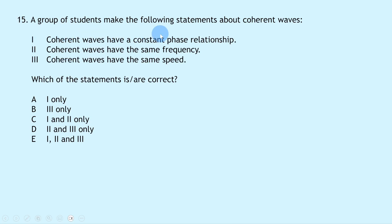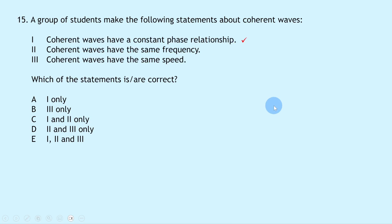Question 15 presents three statements about coherent waves. Statement 1 — coherent waves have a constant phase relationship. Statement 2 — coherent waves have the same frequency. Statement 3 — coherent waves have the same speed. All three are true; coherent waves have the same speed, frequency and wavelength, as seen in the wave equation V = fλ. So all three statements are correct, giving answer E.